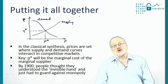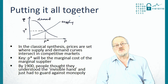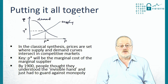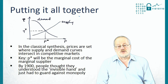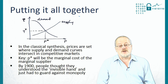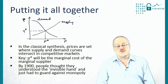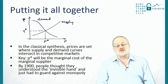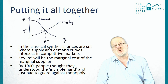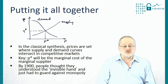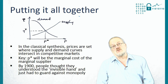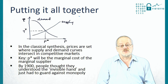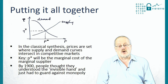In the classical synthesis, prices are set where supply and demand curves intersect in competitive markets, and P star will be the marginal cost of the marginal supplier. If the marginal cost of the marginal supplier is zero, then that's going to be the price. By 1900, people thought they had understood the invisible hand, and the main concern was guarding against monopoly — there were already monopolies such as the railways which caused significant problems.